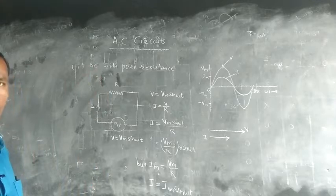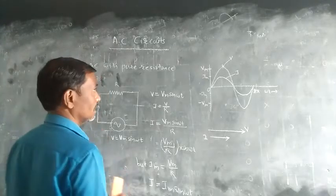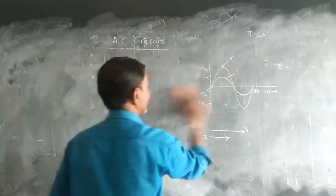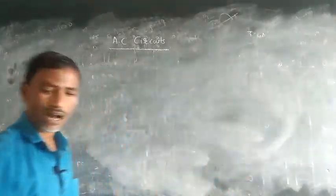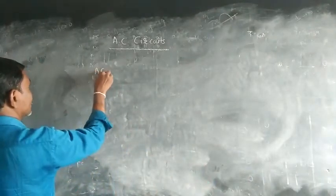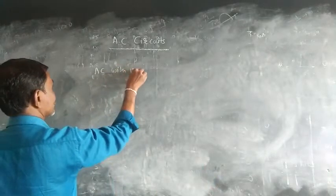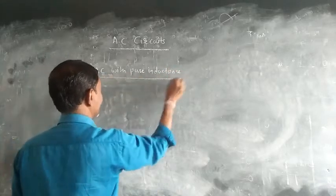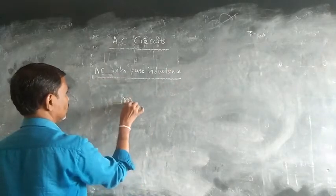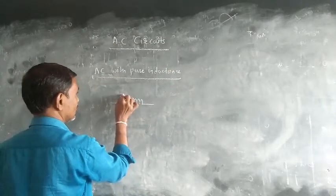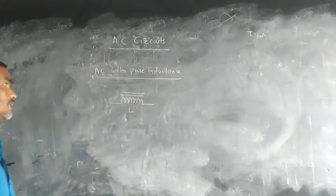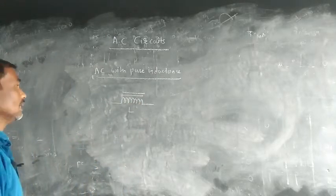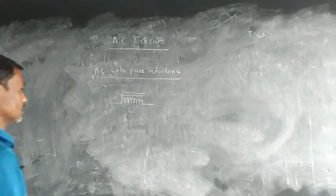Now we will discuss AC with pure inductance. Inductance is a coil. When current flows through the coil, it produces a magnetic field, and the coil has an opposing property. This is how we describe AC connected with a coil — the opposing property is called inductive reactance.